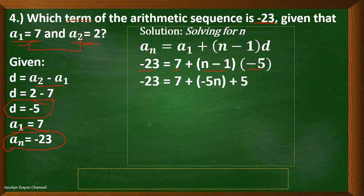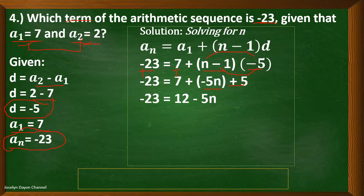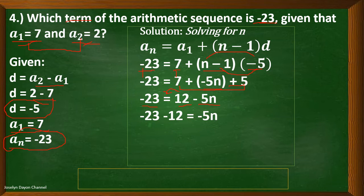Simplifying: negative 23 equals 7 plus, applying the distributive property, n times negative 5 is negative 5n, and negative 1 times negative 5 is positive 5. Combining 7 and 5 gives 12. So negative 23 equals negative 5n plus 12. Transposing 12 to the left side gives negative 12, and negative 23 minus 12 equals negative 35.